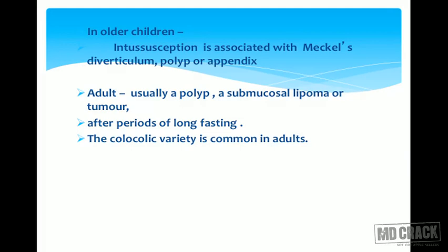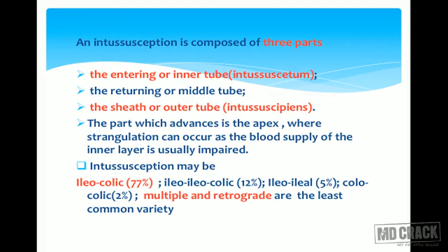In adults, intussusception is seen following a polyp, submucosal lipoma, or tumor. In adults, it is seen after a period of long fasting and the colo-colic variety is common. The intussusception is composed of three parts: the entering or inner tube called the intussusceptum, a returning or middle tube, and the outer sheath called the intussuscipiens.